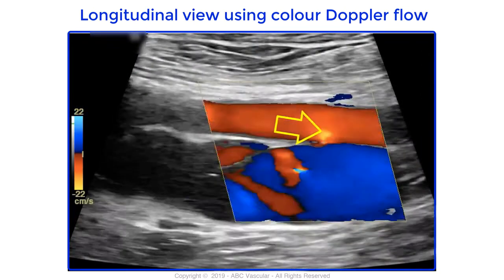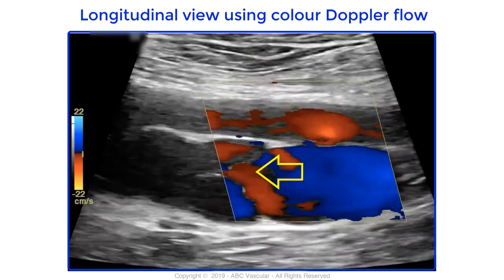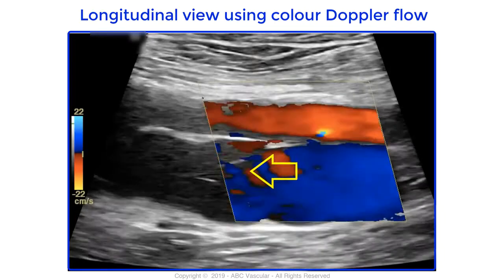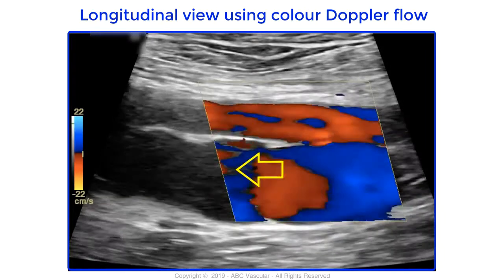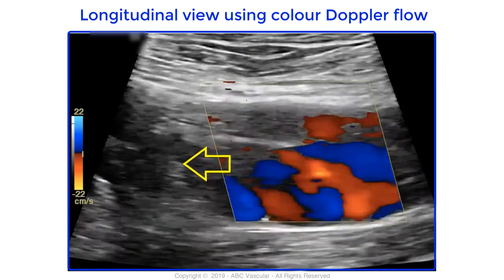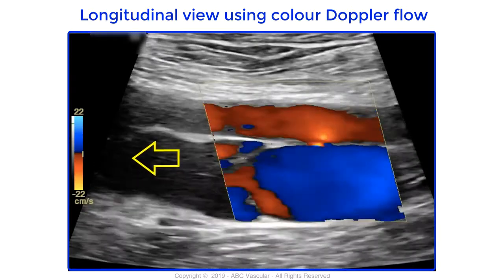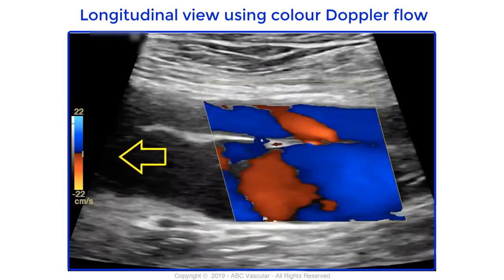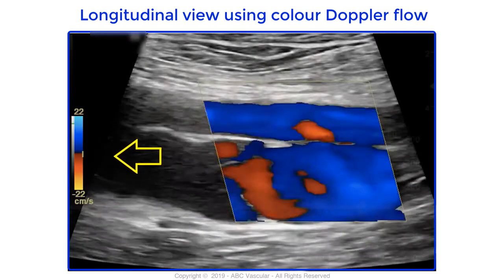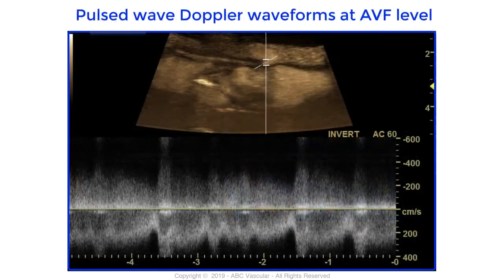Flow enters from the superficial femoral artery into the common femoral vein via the fistula, therefore increasing the speed of flow within the common femoral vein, which becomes turbulent. To confirm the presence of the arteriovenous fistula, pulse wave Doppler is recorded at the level of the fistula site.